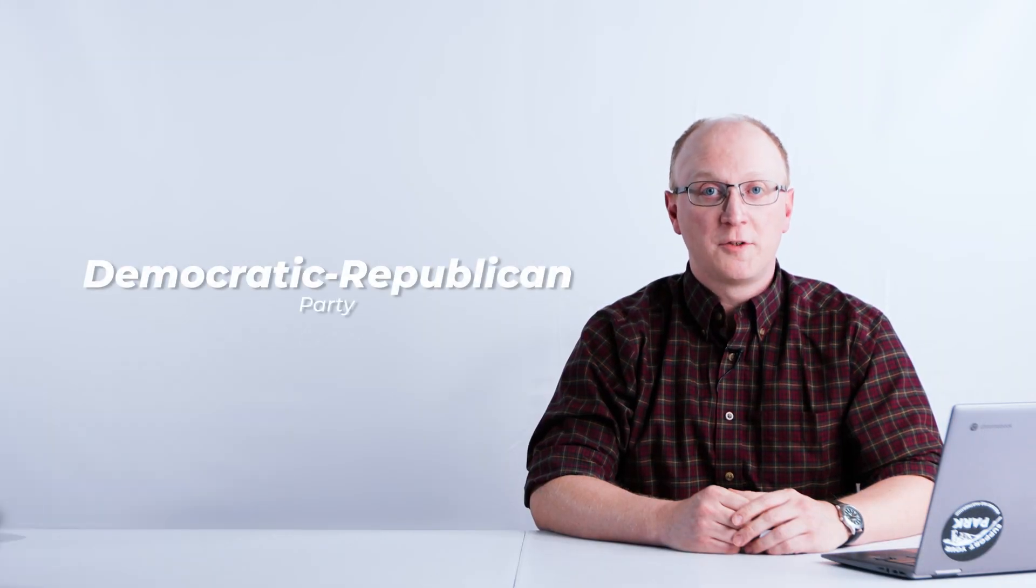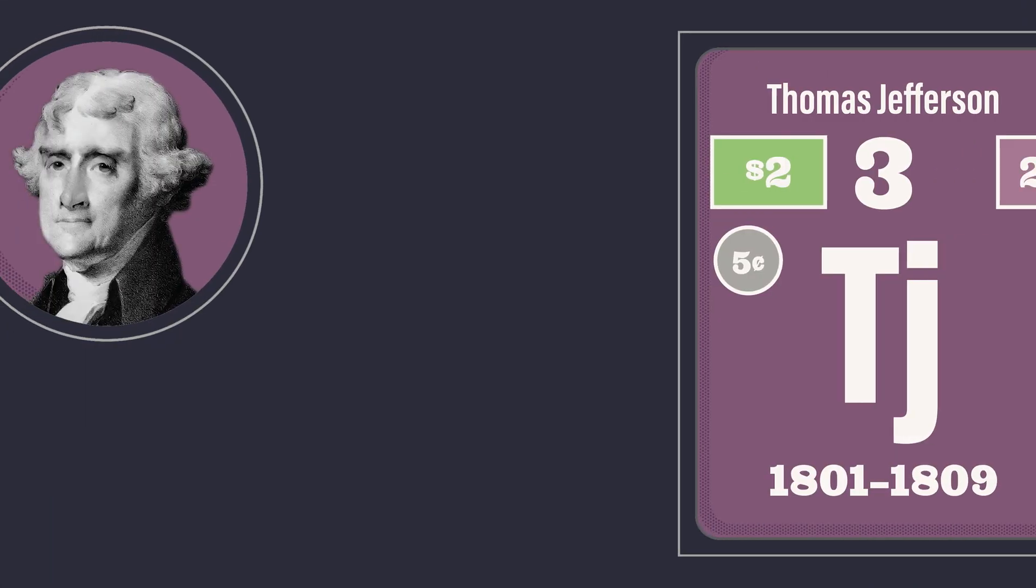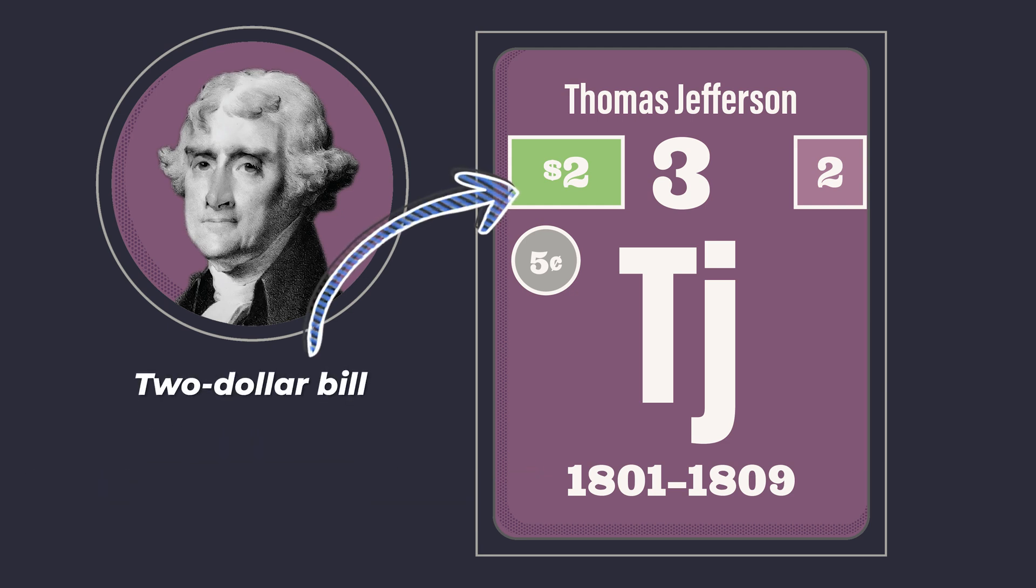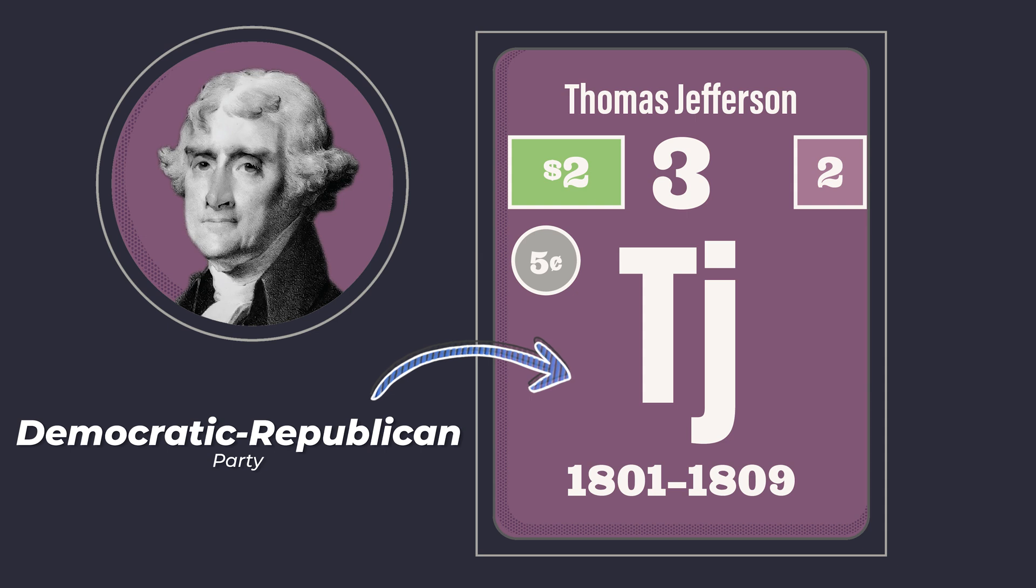Thomas Jefferson, a member of the Democratic-Republican party, served two terms in office. When you look at the periodic cell, you'll see that he served from 1801 to 1809. If you look at the left side of the cell, you'll note that he's featured on the $2 bill as well as the nickel. The purple color of the cell indicates that he was a member of the Democratic-Republican party.